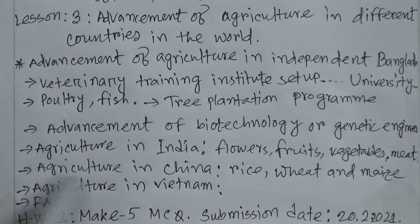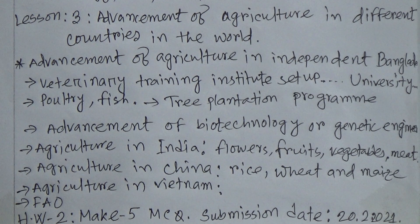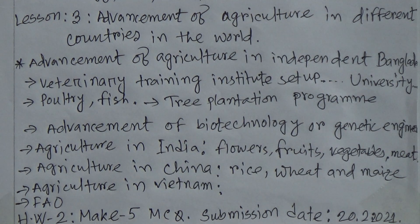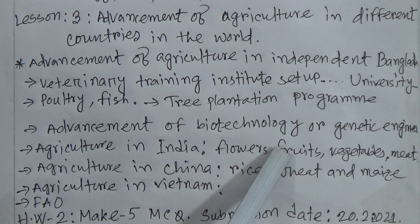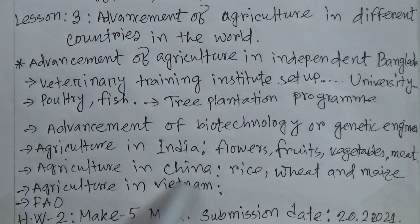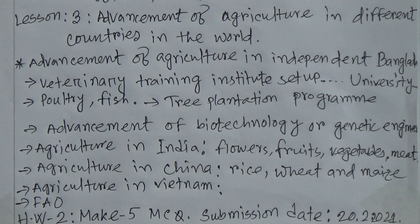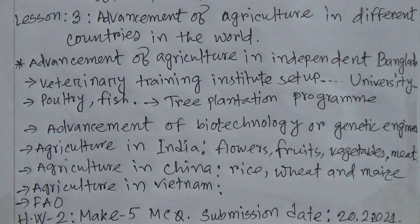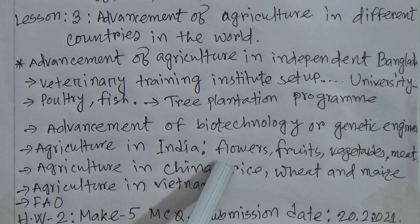Agriculture in India: India is a large country like China, and as a result there is a large acreage of plain land in India. They are very good at producing flowers, fruits, vegetables, meat, fish, etc. Agriculture in China: China is also a much bigger country, and rice, wheat, maize, etc. are grown there to a great extent. Our country's researchers can also get help from those countries for producing hybrid crops.